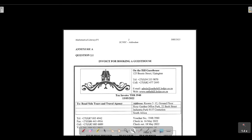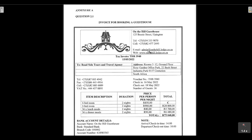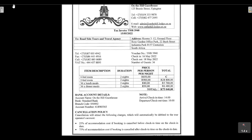Looking at Annex A — the invoice — we can see the guest house is called On the Hill Guest House, located at 125 Bossy Street, Upington. We're given telephone numbers, a cell phone number, email, and website. The tax invoice number is provided, and the booking was made by Roadside Tours and Travel Agency, whose address is Rooms 3 to 12, Ground Floor, Rosie Garden Office Park, R22 Bush Street, Industrial Park, 0157, Centurion.